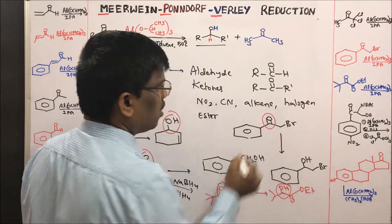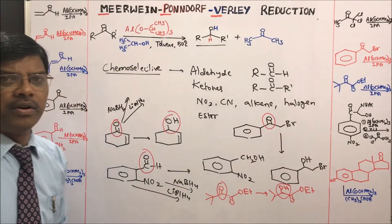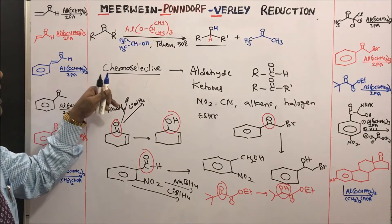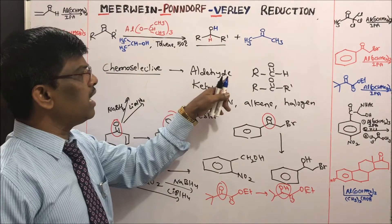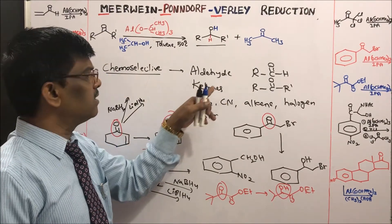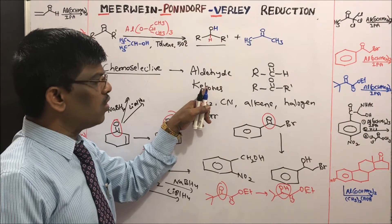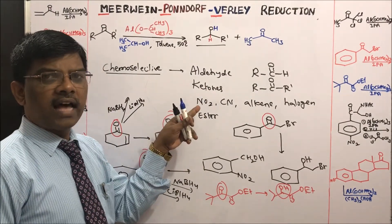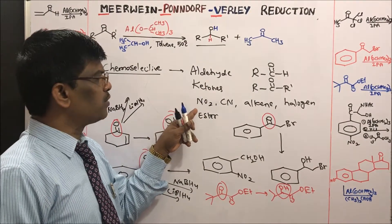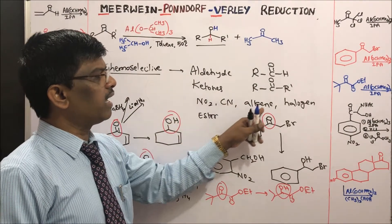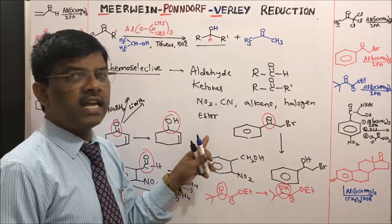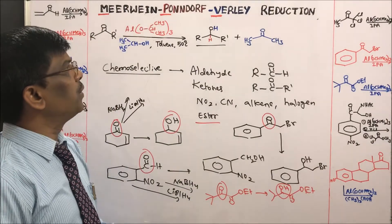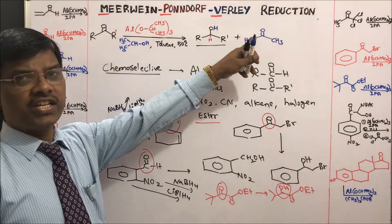This reaction is highly chemoselective — only aldehydes and ketones undergo reduction to alcohols, whereas other functional groups like nitro, cyanide, alkene, halogen, and ester are unreactive in MPV reduction.